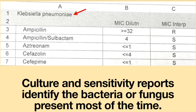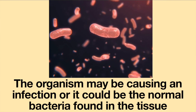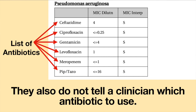Culture and sensitivity reports identify the bacteria or fungus present most of the time. However, they do not identify an infection — they only report if a microorganism is present. The organism may be causing an infection, or it could be the normal bacteria found in the tissue, or it could be contamination of the culture. Culture and sensitivity reports also do not tell a clinician which antibiotic to use.